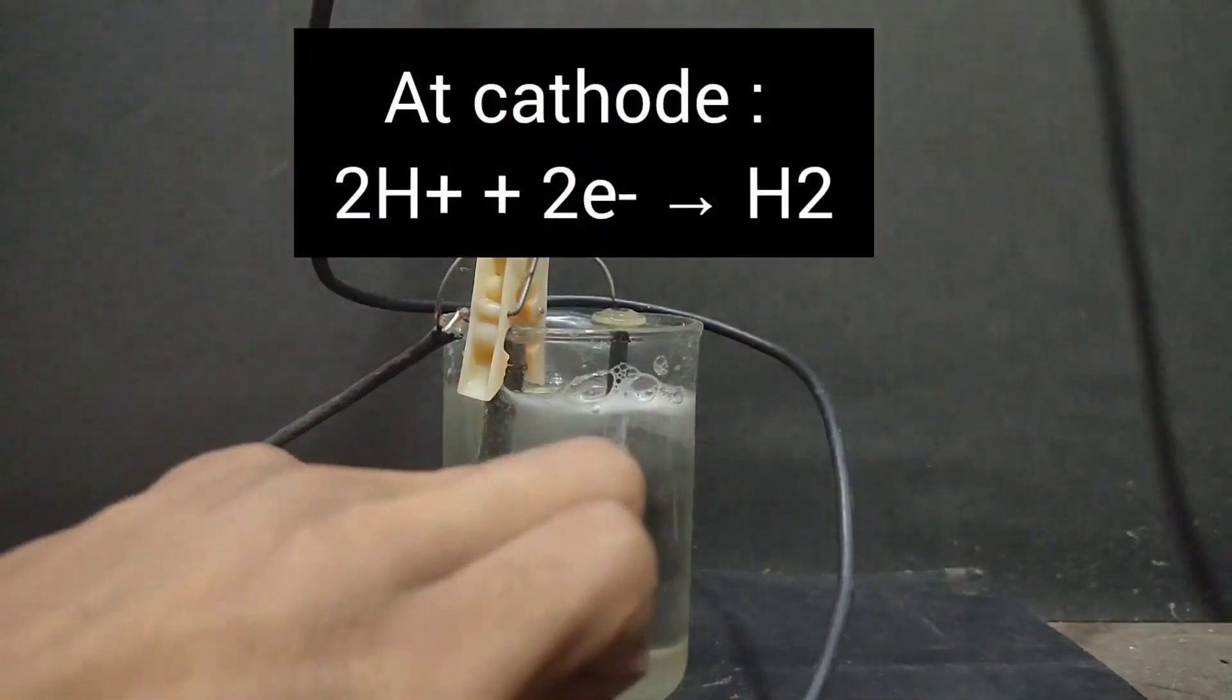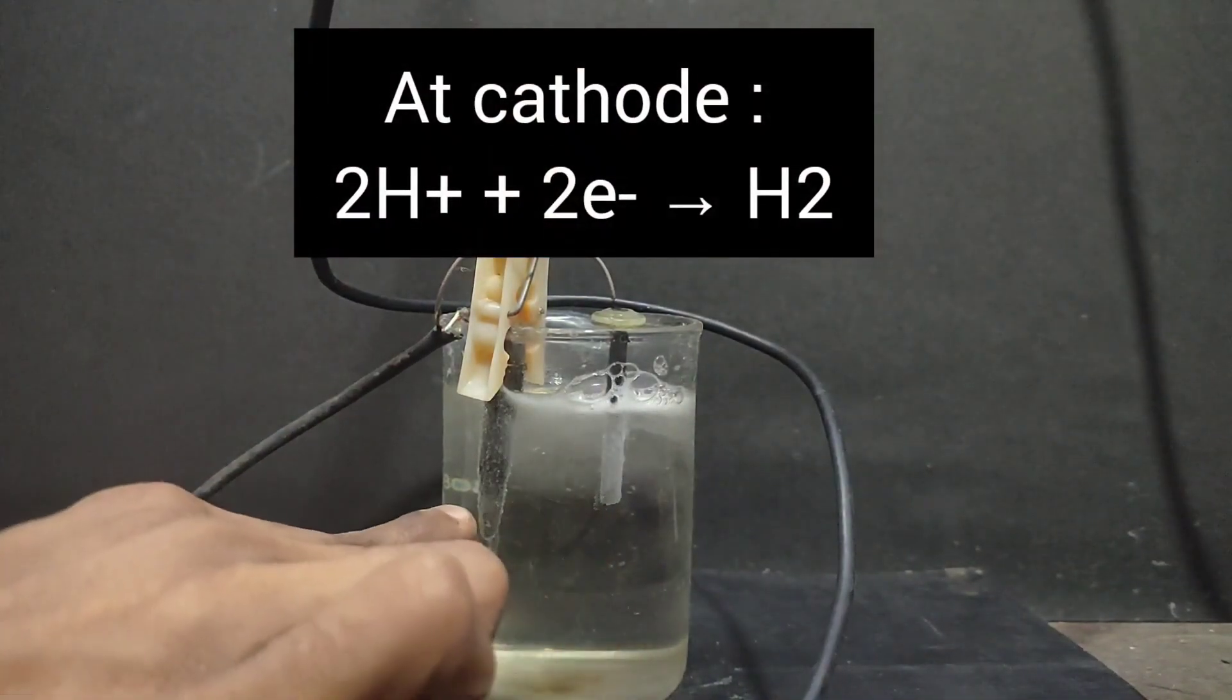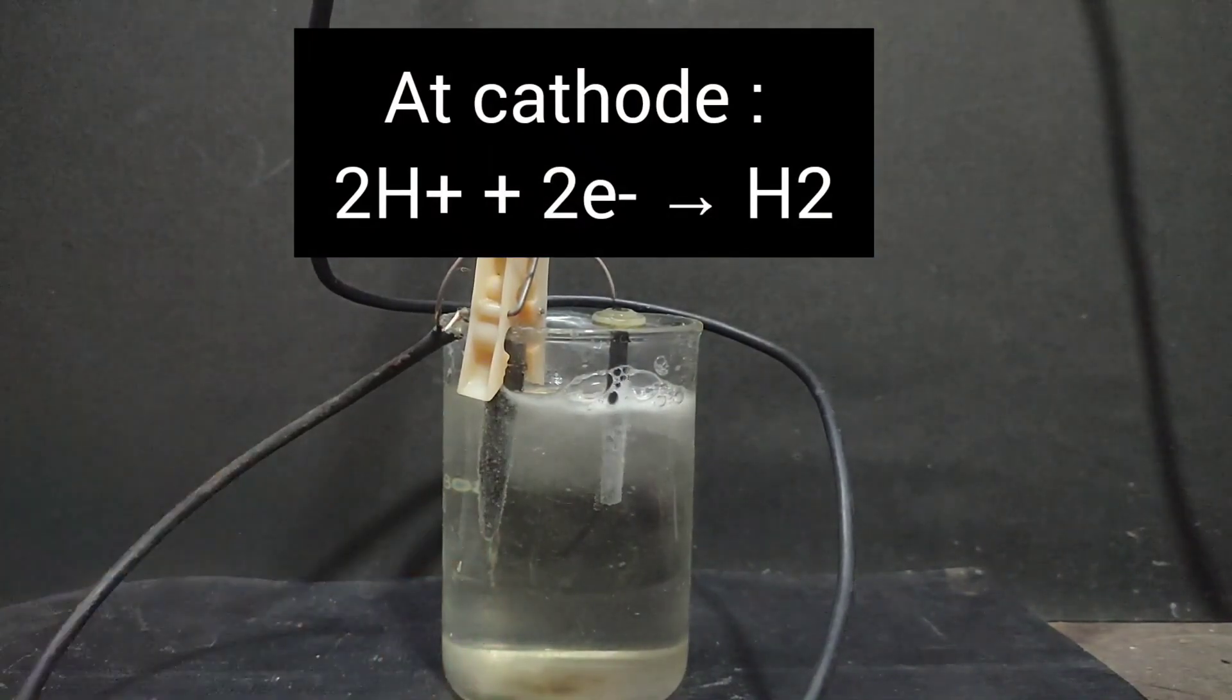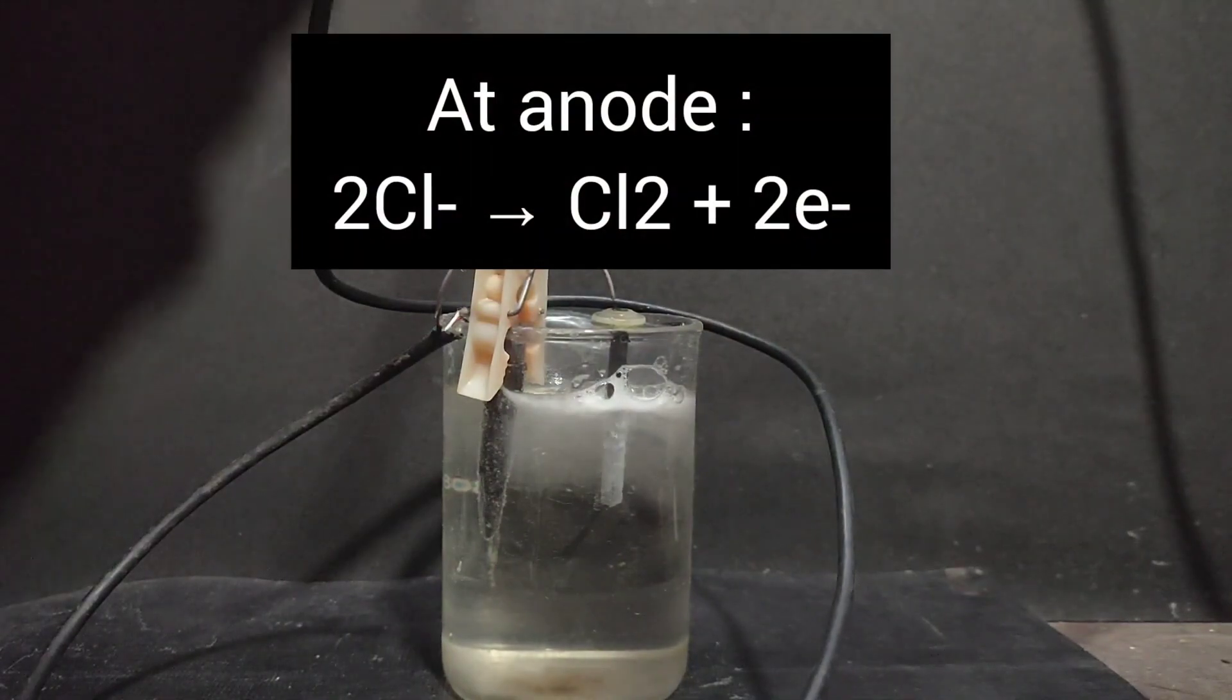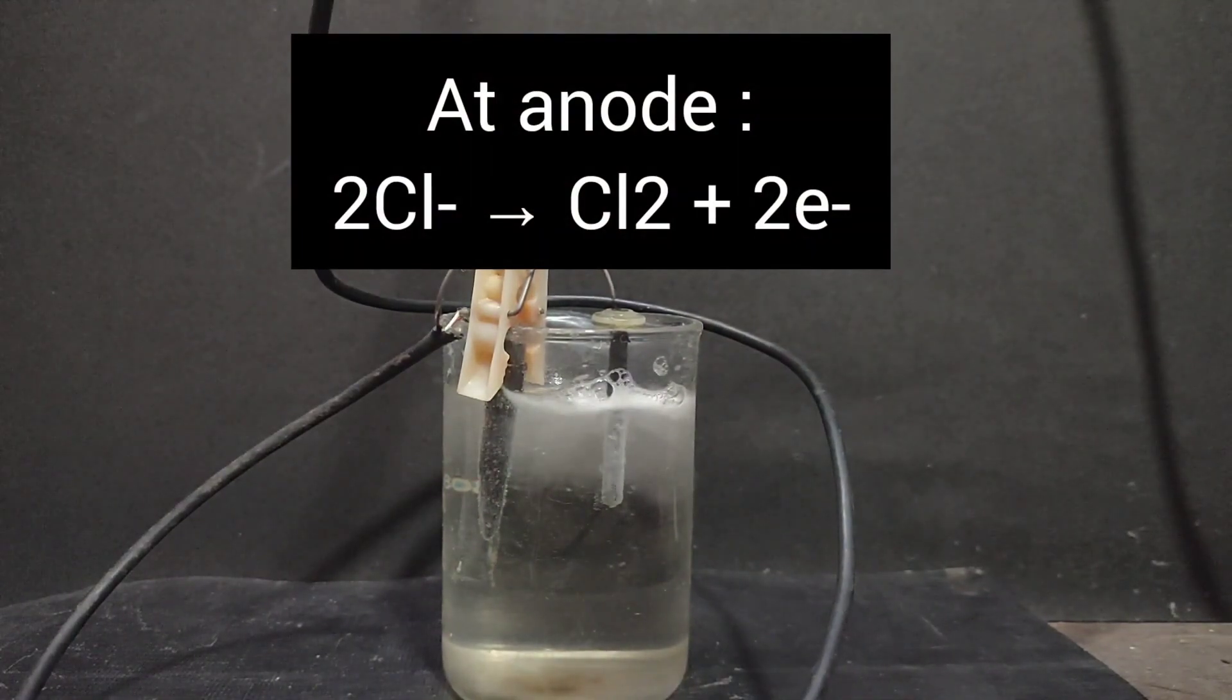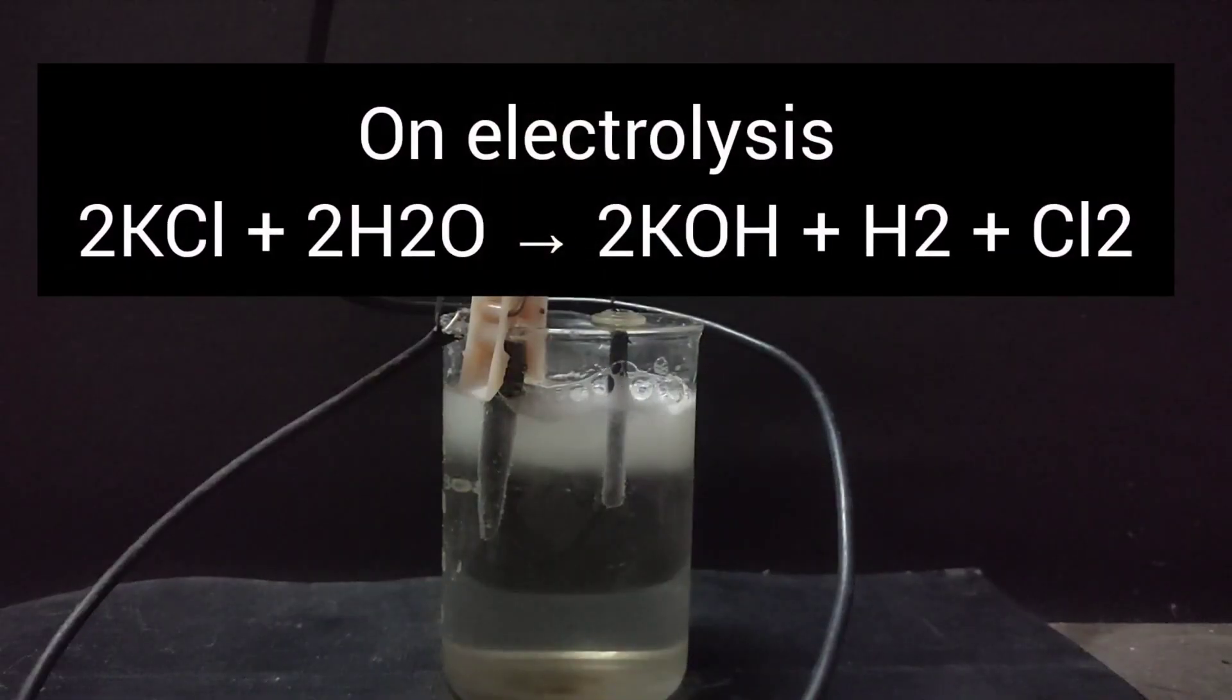On the cathode the H+ ions are getting reduced to hydrogen, and on the anode the chloride ions, because they are in more concentration, are getting oxidized to chlorine, as a result of which potassium hydroxide is left in the solution.